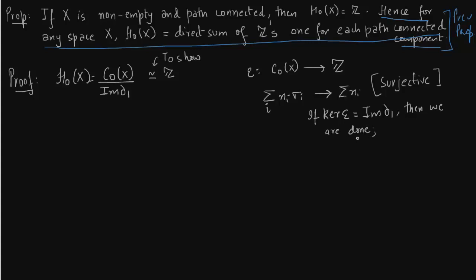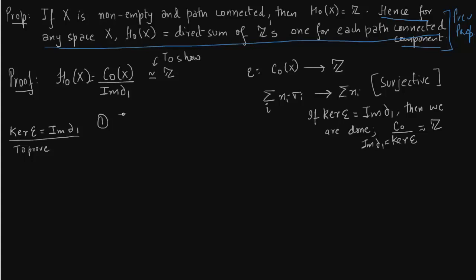If the kernel of this map is the image of delta_1 we are done, because that gives us the zeroth homology group. We have to show two things: first, that the image of delta_1 lies in the kernel of E, and second, that the kernel of E lies in the image of delta_1. As a standard proof in algebra, we take an element of the boundary map delta_1, apply E to it, and show that the result is 0 — that will show that the element of delta_1 lies in the kernel.